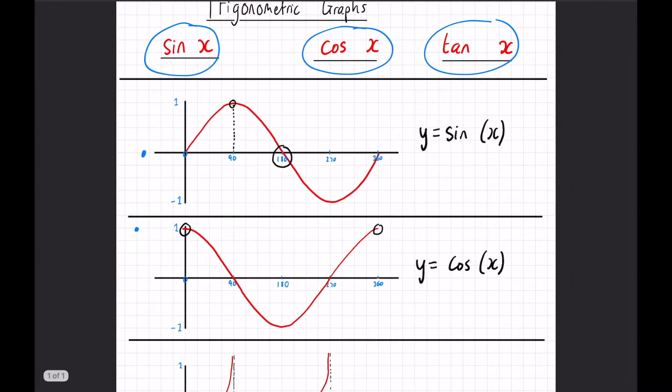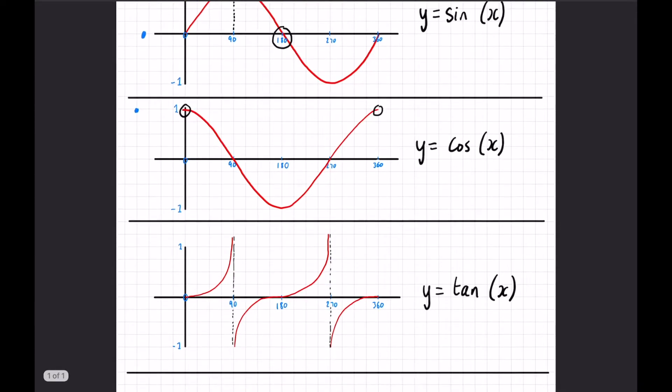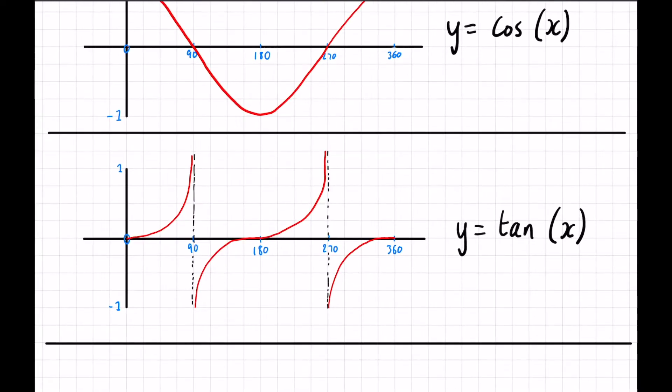Okay now we've dealt with those two. The slightly harder one, a bit more confusing, is tan x. So tan x is a repeated pattern every 180 degrees. Again this would go outside the range of 0 to 360 but you can see this repeated pattern that keeps happening.